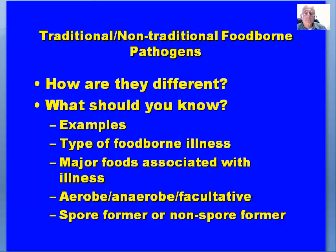We've talked about traditional and non-traditional foodborne pathogens — how are they different? What should you know? You should know examples of foodborne pathogens — both traditional and non-traditional — the type of foodborne illness caused by that particular microorganism, the major foods associated with the illness, whether they're aerobe, anaerobe, or facultative, and whether they're a spore former or non-spore former. If you're not familiar with spore formers and non-spore formers, I would urge you to go to a food microbiology text or find this information online.